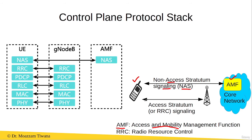In the access network, between the user equipment and the gNB, we have the access stratum signaling, also called RRC signaling, where RRC stands for Radio Resource Control.